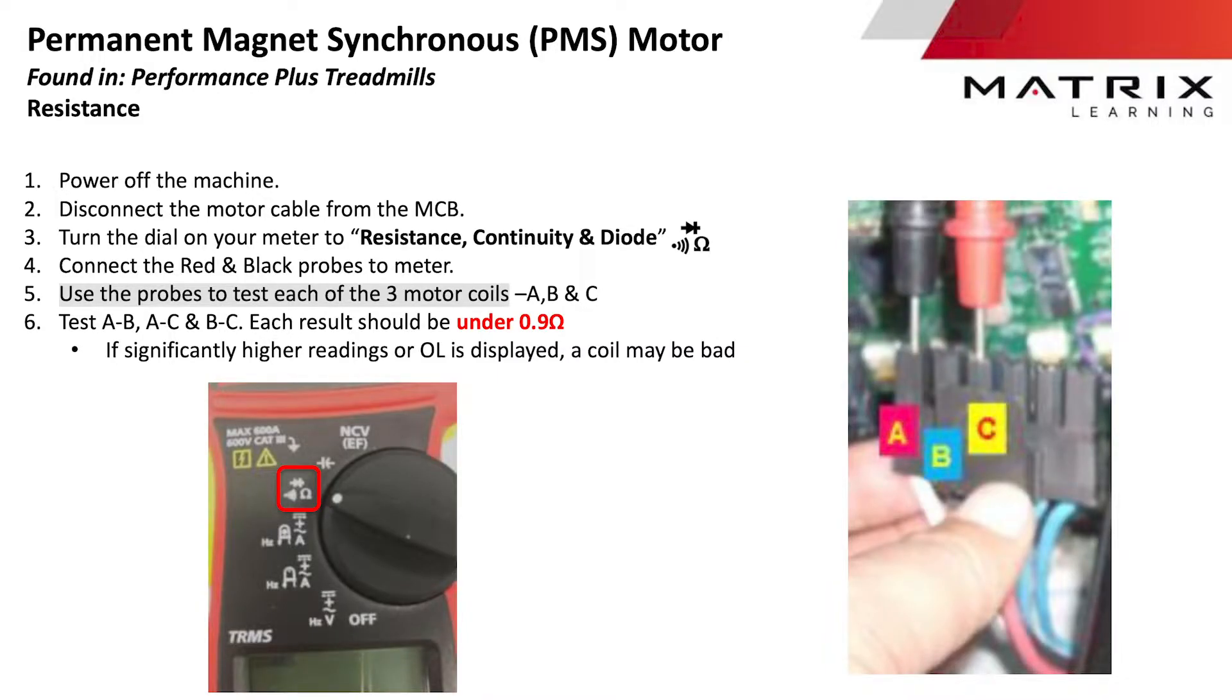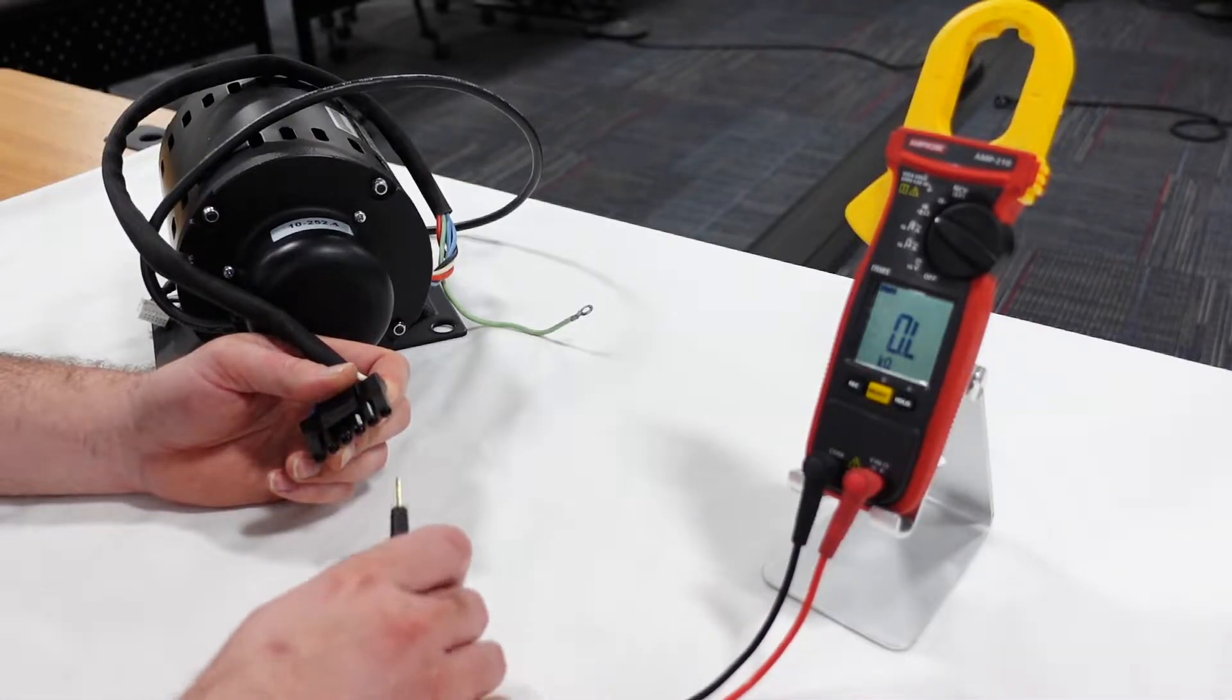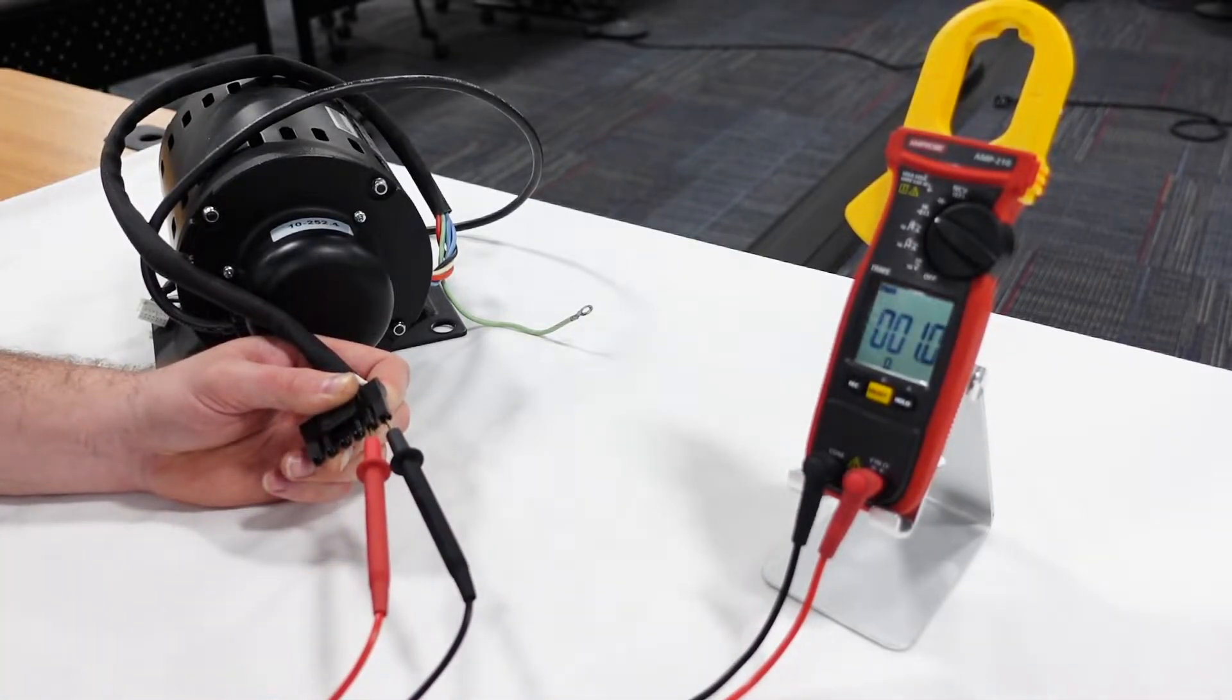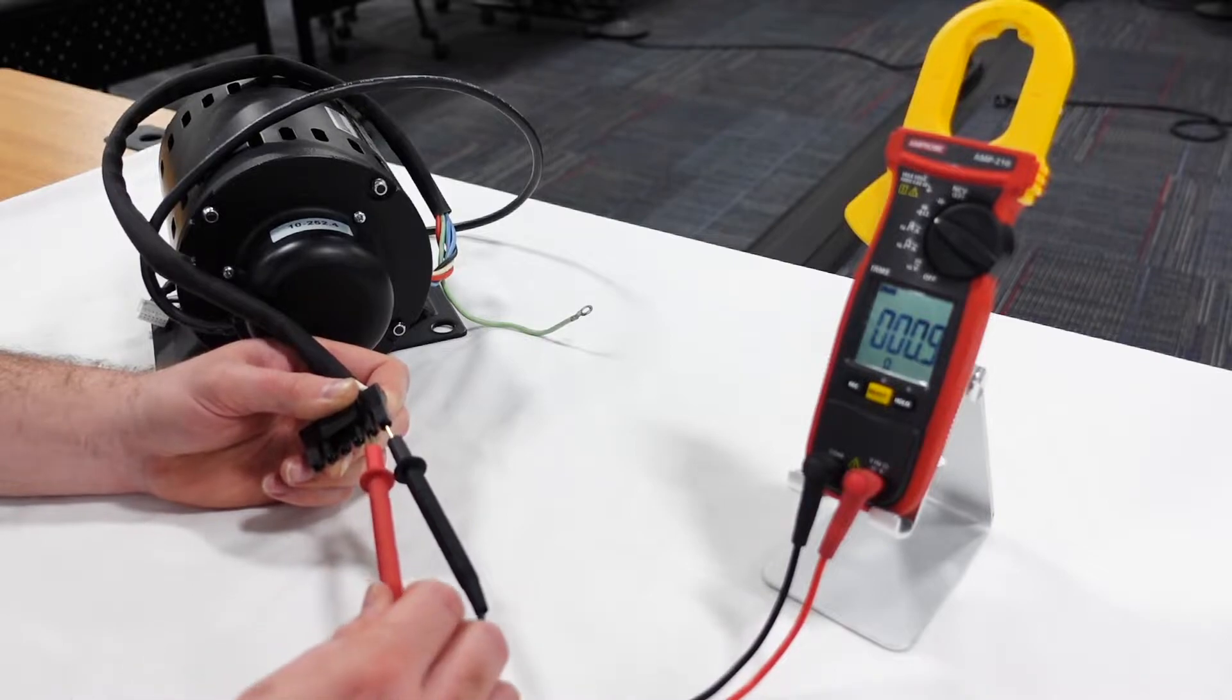Another type of motor, which is used on the Performance Plus treadmill, is the PMS motor. It can be tested in the same way as the AC induction motor, but coil resistance values should be approximately 0.9 ohms on any of the three pairs of coil wires.